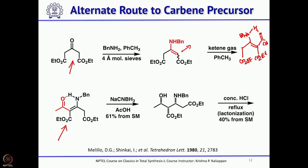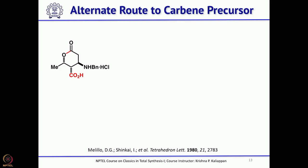Treatment with concentrated HCl causes bond rotation, and the resulting intermediate undergoes intramolecular cyclization to give a 6-membered lactone. The ester group is also hydrolyzed to the carboxylic acid under these conditions.